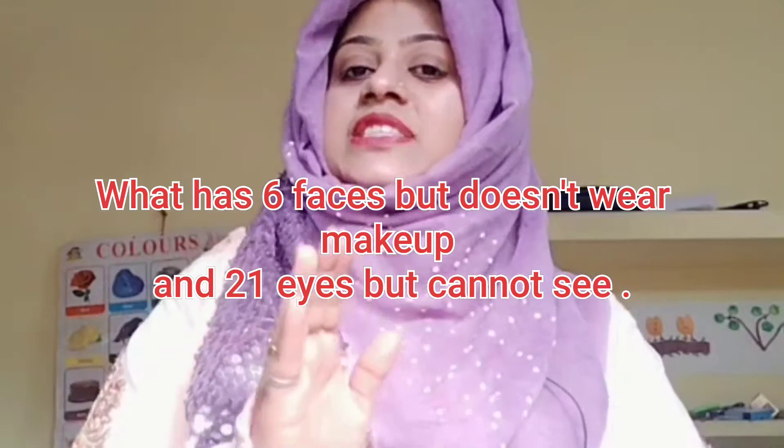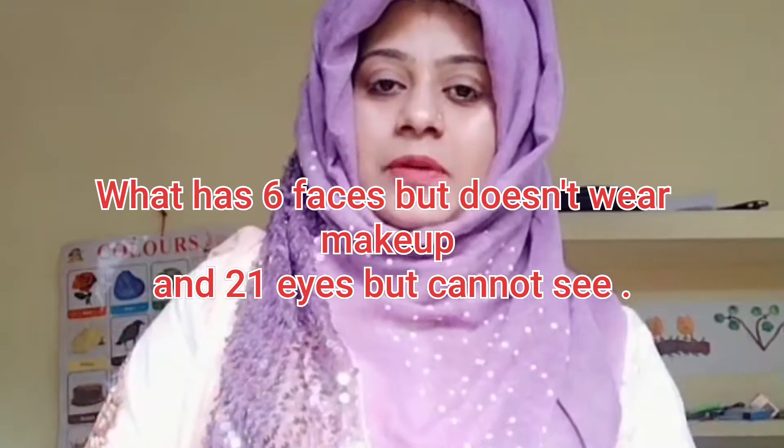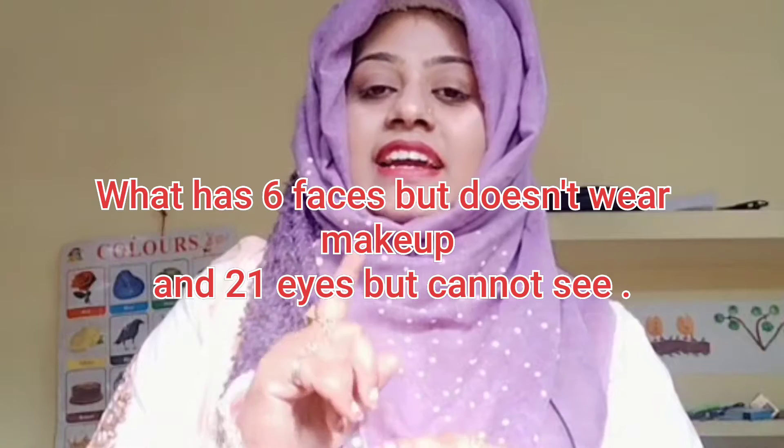The next question is: what has 6 faces but doesn't wear makeup, and 21 eyes but cannot see? The answer is a dice. A dice has 6 faces and 21 eyes.